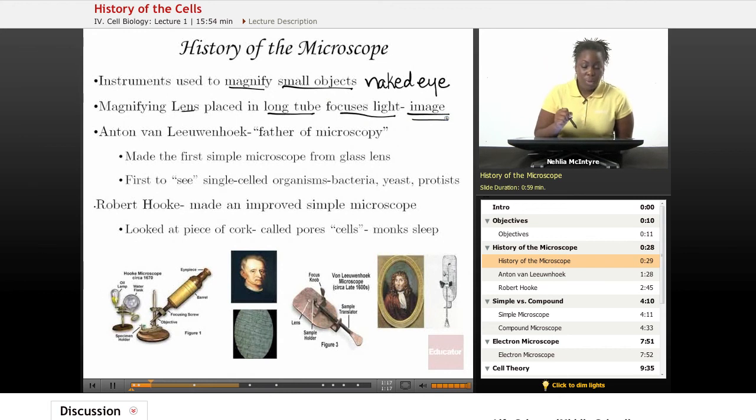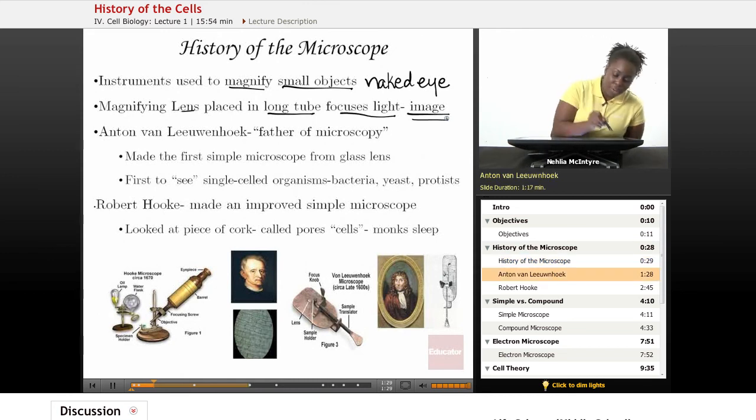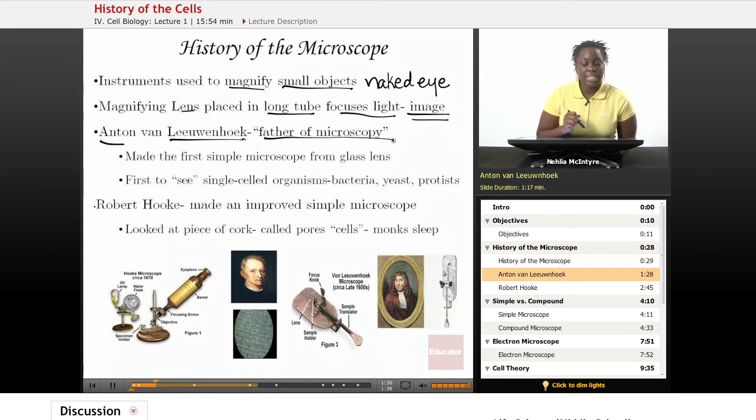Now, there were two scientists that helped to usher in the study of microscopy or microscopic organisms or microscopic objects. And the first one was Anton van Leeuwenhoek, and he was considered to be the father of microscopy because he invented the very first very simple microscope.